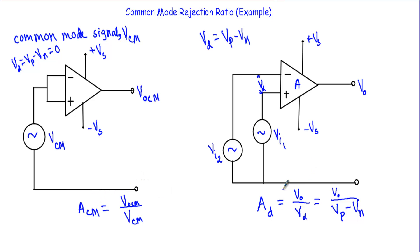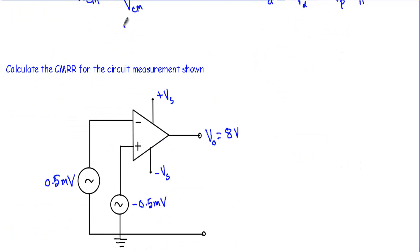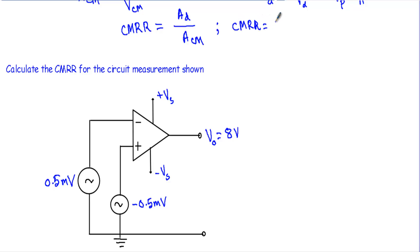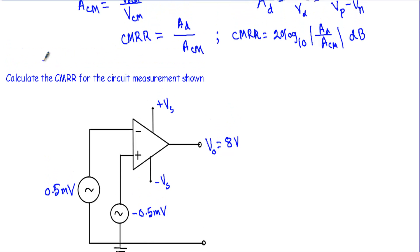Now, what is the common mode rejection ratio? If I know the common mode gain and the differential gain of an operational amplifier, I can define the CMRR using this formula: CMRR equals the ratio of differential gain AD to common mode gain ACM. If I take the logarithm, CMRR equals 20 log base 10 of AD divided by ACM, and since it is on a logarithmic scale, its value will be in decibels.